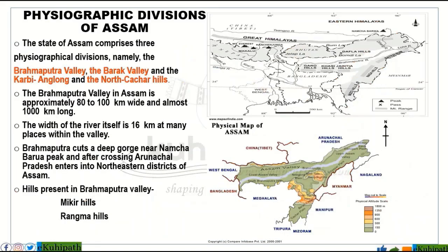The physiography of Assam includes major divisions: Brahmaputra Valley, Barak Valley, Karbi Anglong, and North Cachar Hill areas. The two valley regions are Brahmaputra Valley and Barak Valley. Karbi Anglong is a plateau region, and North Cachar Hills is the hill region.